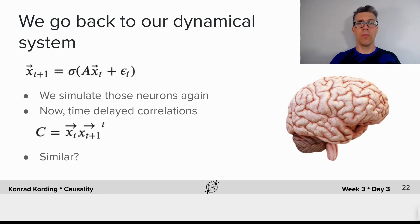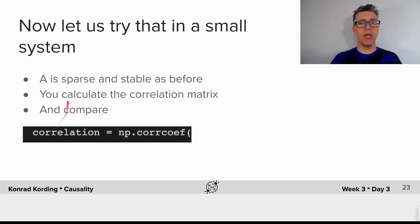Well, there's only one way of finding out. We'll try it in a small system. We set up the same dynamical system we talked about before. We make it so that again A is sparse and stable as before, and you calculate the correlation matrix and then you compare. Keep in mind that to calculate the correlation, you can use the corrcoef function.